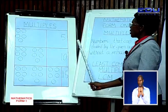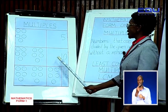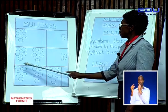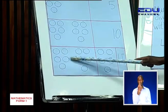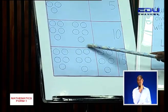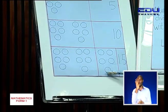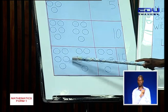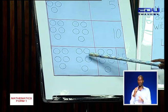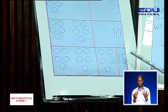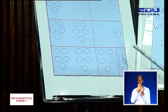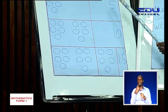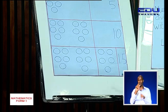I can also put these 5 in three groups. This is the first group of 5, second group of 5, and third group of 5. Now, the total of these three groups is 15. So we can say the multiple of 5 is also 15.